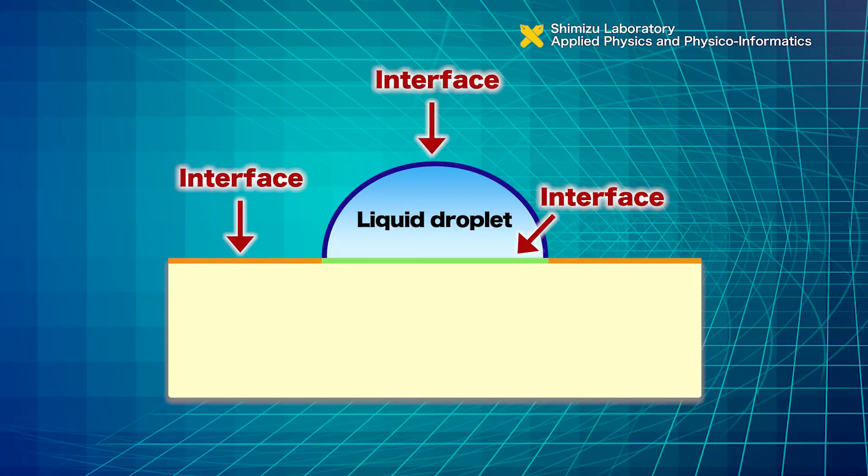We can see how molecules absorb and react on surfaces. Interface is the boundary between two different phases. Surface is one type of interface, and it is the boundary between solid and vacuum.